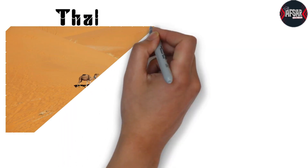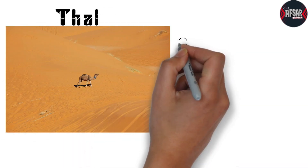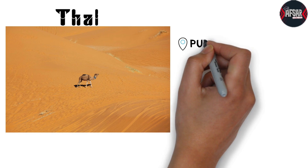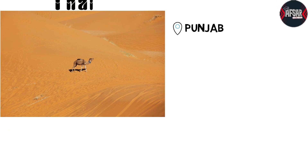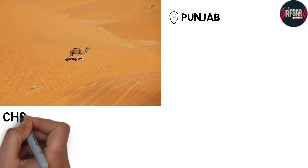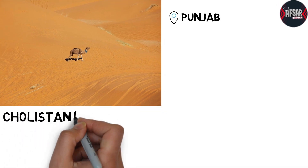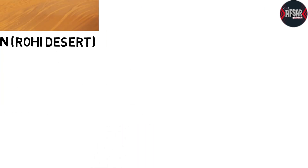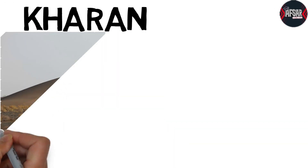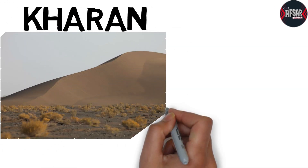The second desert is Thal. Thal desert is located in Punjab. Thar is in Sindh and Thal is in Punjab. The third desert is Cholistan, which is also called the Roi desert.